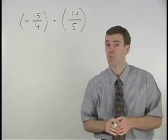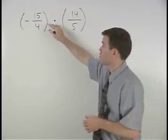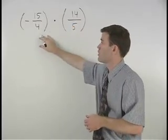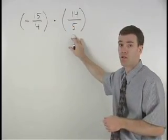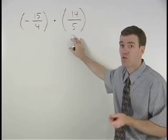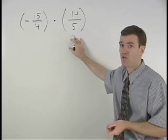Before multiplying two fractions together by multiplying across their numerators and multiplying across their denominators, you should always try to cross cancel as your first step.